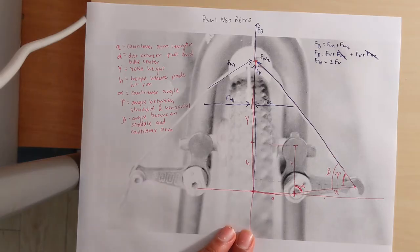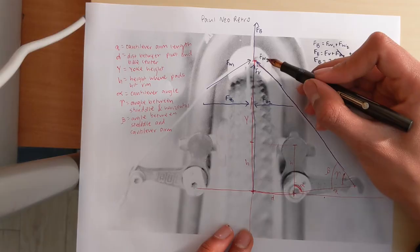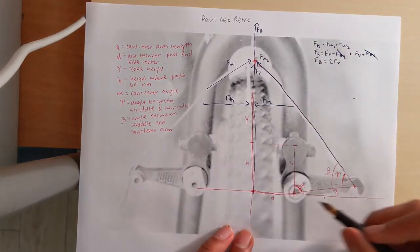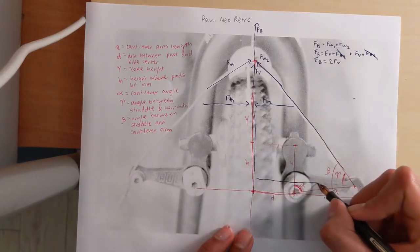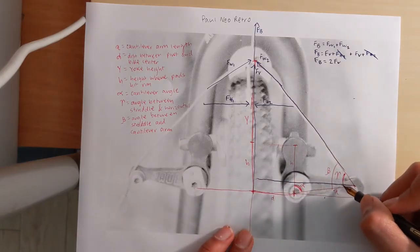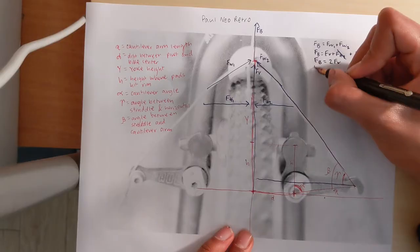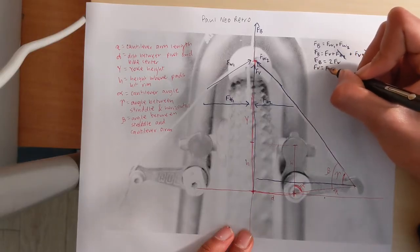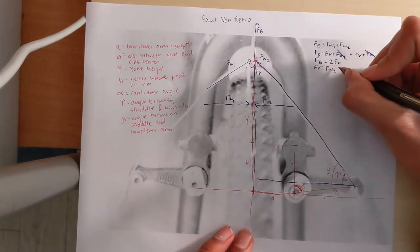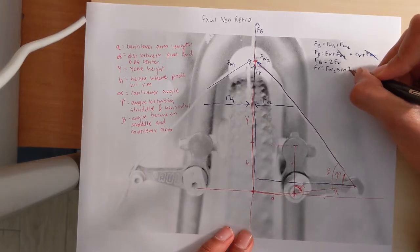Now how do we find Fv given Fw2? Easy, we use an angle that we had previously. In this case we use gamma. Fv equals Fw2 sine gamma.